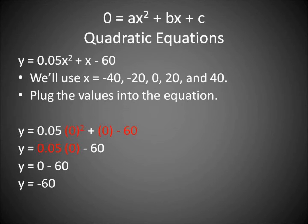Plug in zero. Now we have zero squared plus zero minus 60. Multiply it out. 0.05 multiplied by zero minus 60 gives us negative 60.